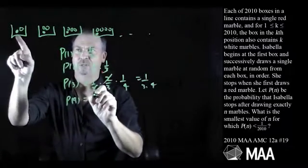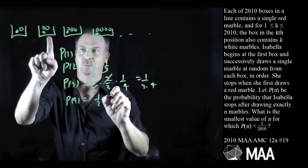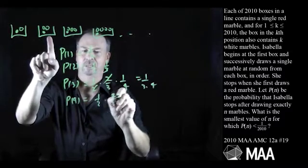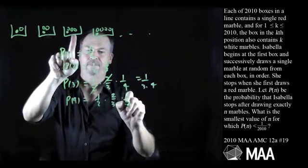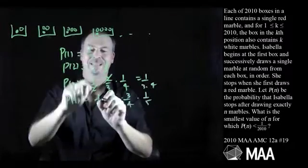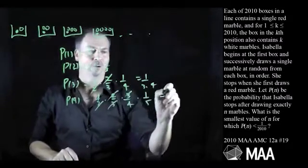p(4) had to be choose a white, one half, choose a white, two thirds, choose a white, three fourths, choose a red, one fifth. Yeah, I'm glad I don't simplify things as I go along.